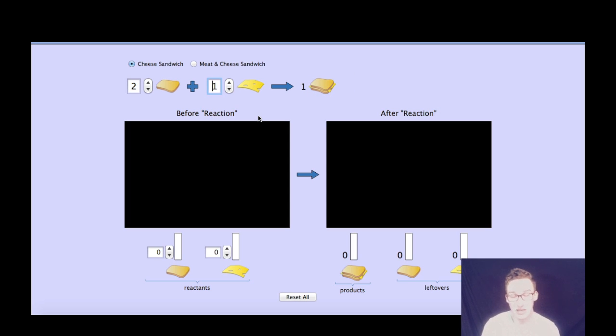Essentially, stoichiometry is very much like reading a recipe. And if you wanted to double your recipe, halve your recipe or triple your recipe, how would that affect your reactants or your products? How would that affect your ingredients and what you're trying to make? So if I were to follow my recipe directly as it's outlined here, I would need two slices of bread, one slice of cheese, and I would make one complete sandwich.